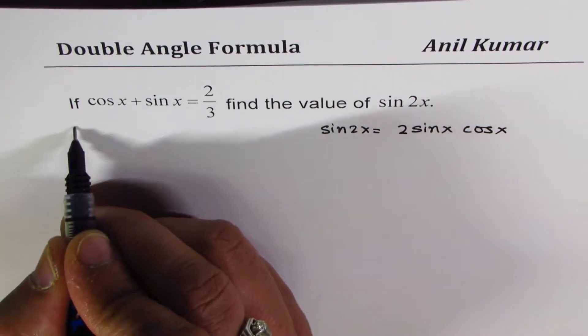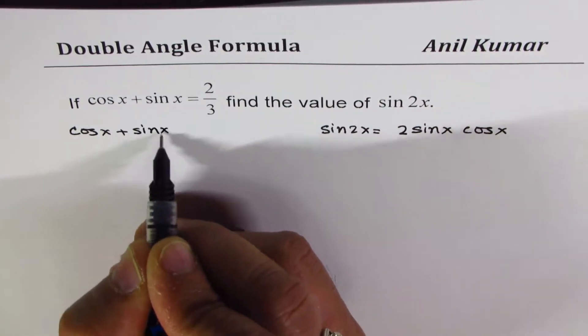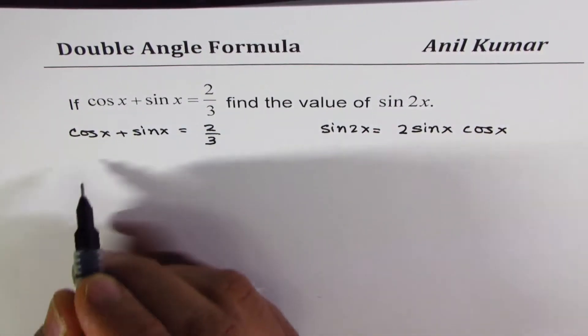But what have we given? We are given cos x plus sin x equals 2 over 3. So what we will do now is square both sides.